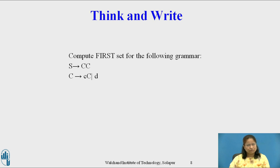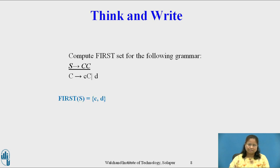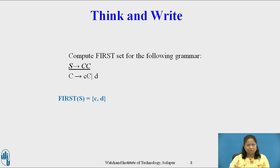I hope all of you have completed this activity. Now consider how to compute the First Set for this grammar. This grammar contains non-terminals S and C. To compute First(S), consider the production S derives C C. First(S) = First(C C), and First(C C) = First(first C) plus non-epsilon symbols of First(second C) if First(first C) contains epsilon.